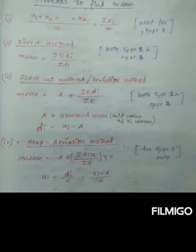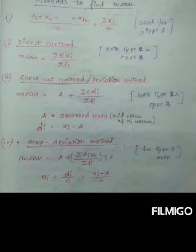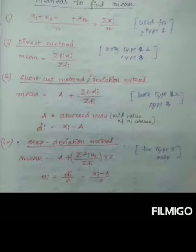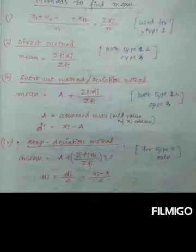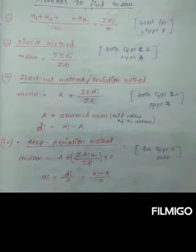The second method is the direct method. Here we use the formula: summation fi·xi divided by summation fi. fi is frequency and xi is the variate; we multiply them, add up, and divide. This direct method can be applied to Type 2 and Type 3 data. The third method is the shortcut method, also called the deviation method. Its formula is: A plus summation fi·di divided by summation fi, where A is the assumed mean and di equals xi minus A.